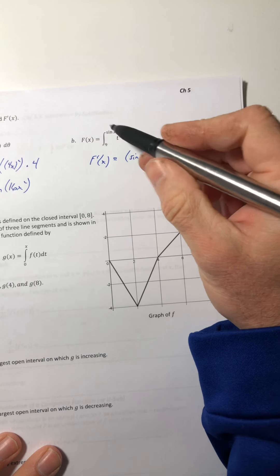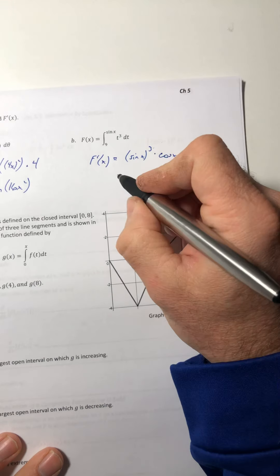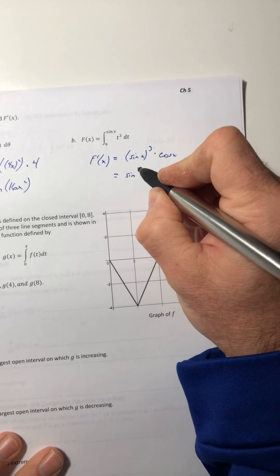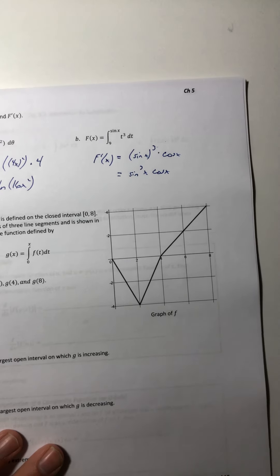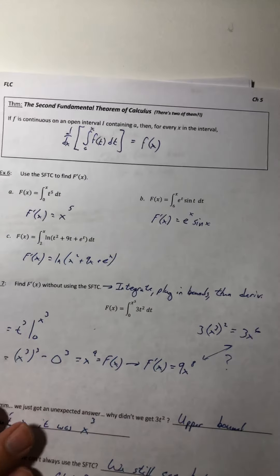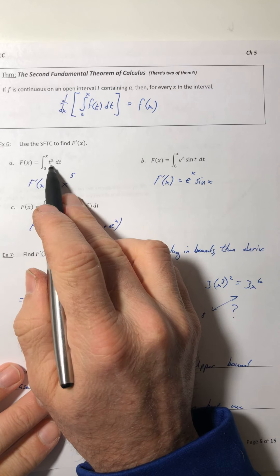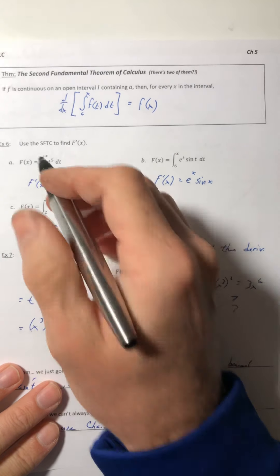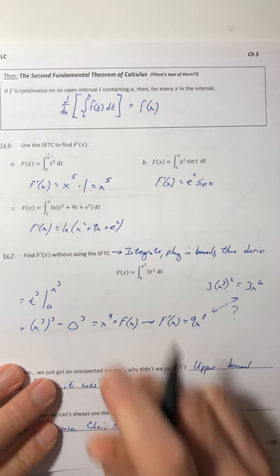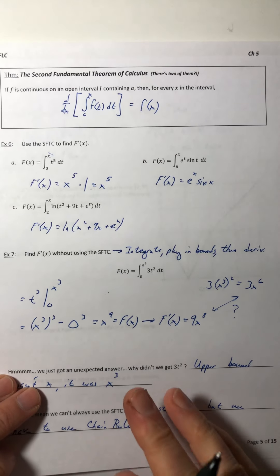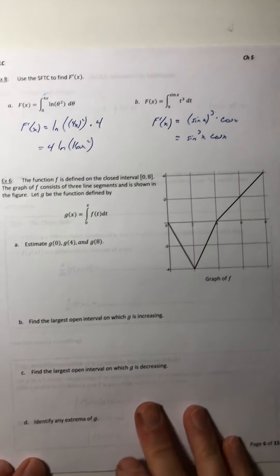So plug in the bound, and then multiply by the derivative of the bound. So sine to the third times cosine of x. And it worked. It would have worked in those earlier questions when we use the theorem. So like on part a, you plugged in x for the t, you got x to the fifth. Well, if you multiply by that upper bound, it's just 1. So you ended up with x to the fifth. So you were really using the chain rule all along, you just didn't see it.